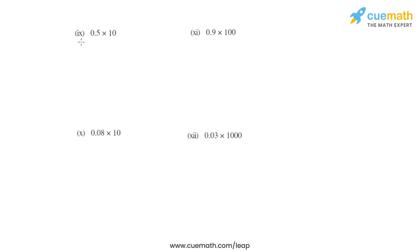In the ninth bit, we have 0.5 times 10, so the decimal will be moving one place towards the right, and the product that we get is 5. Coming to the tenth bit, we have 0.08 multiplied with 10. The decimal moves one place towards the right and comes between 0 and 8, so the answer that we get is 0.8.